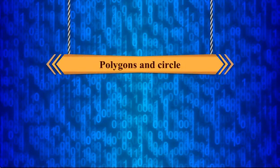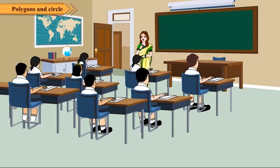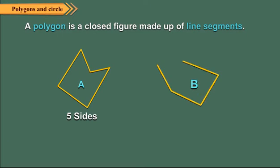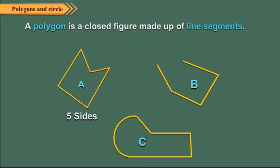Polygons and circles. Do you know what polygons are? A polygon is a closed figure made up of line segments. Figure A is a polygon having five sides. Figure B is not a polygon because it is not closed, though it is made up of line segments only. Figure C is also not a polygon because it is made up of line segments and curves, though it is closed.